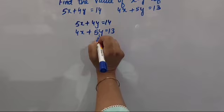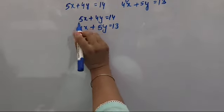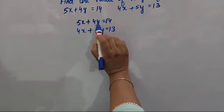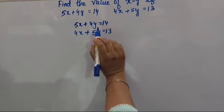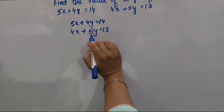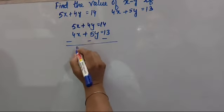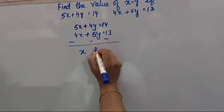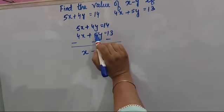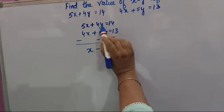To find the value of X minus Y, you subtract the two equations. 5X minus 4X is equal to X, and 4Y minus 5Y is equal to negative Y. So subtracting gives you X minus Y.